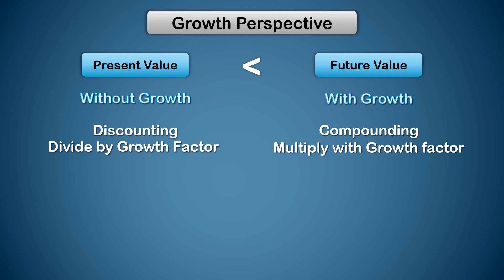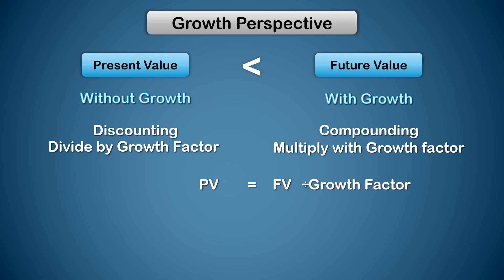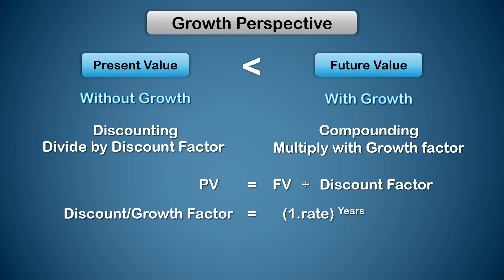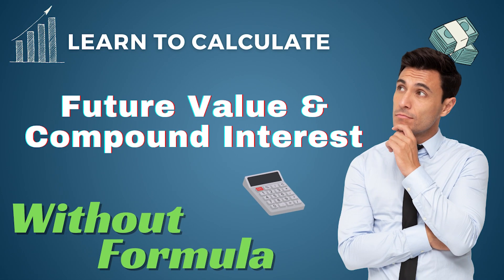The relationship between present value and future value can be expressed in an equation: future value is present value multiplied by the growth factor; present value is future value divided by the growth factor. When we divide, we generally call it the discount factor instead of growth factor, but the formula is the same: (1 + rate) to the power of years. We discussed this formula in detail in the future value video, so we won't go further here. If it's not clear, please watch that video — the link is in the description.